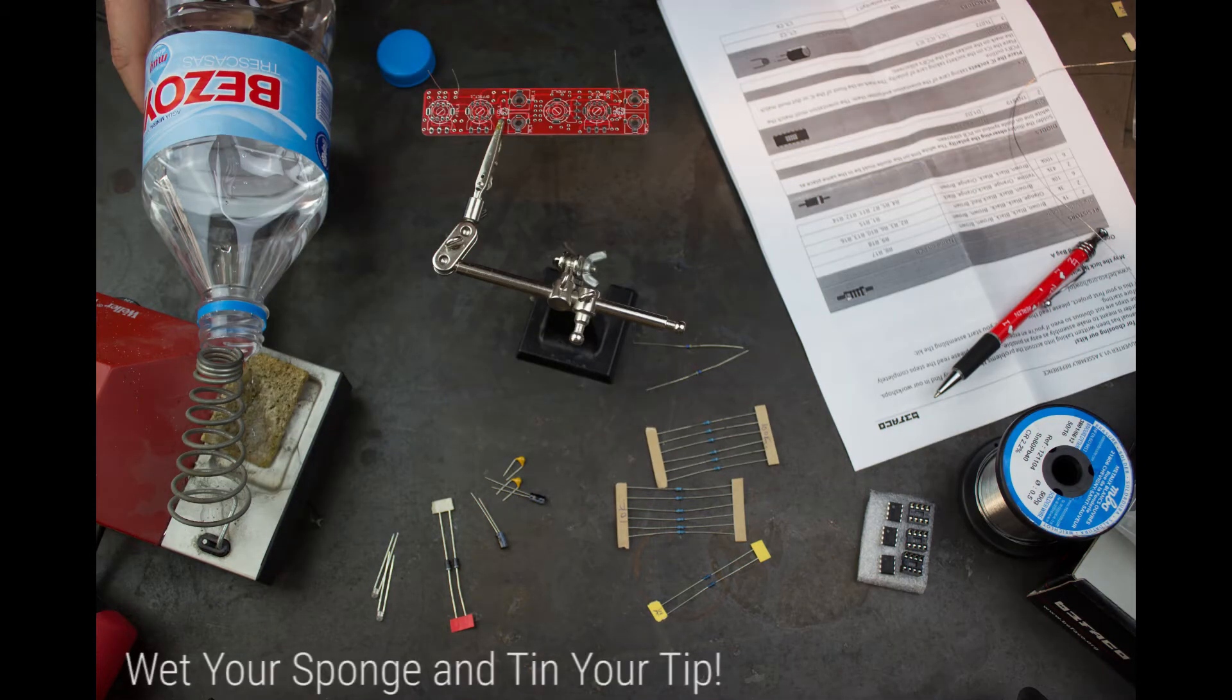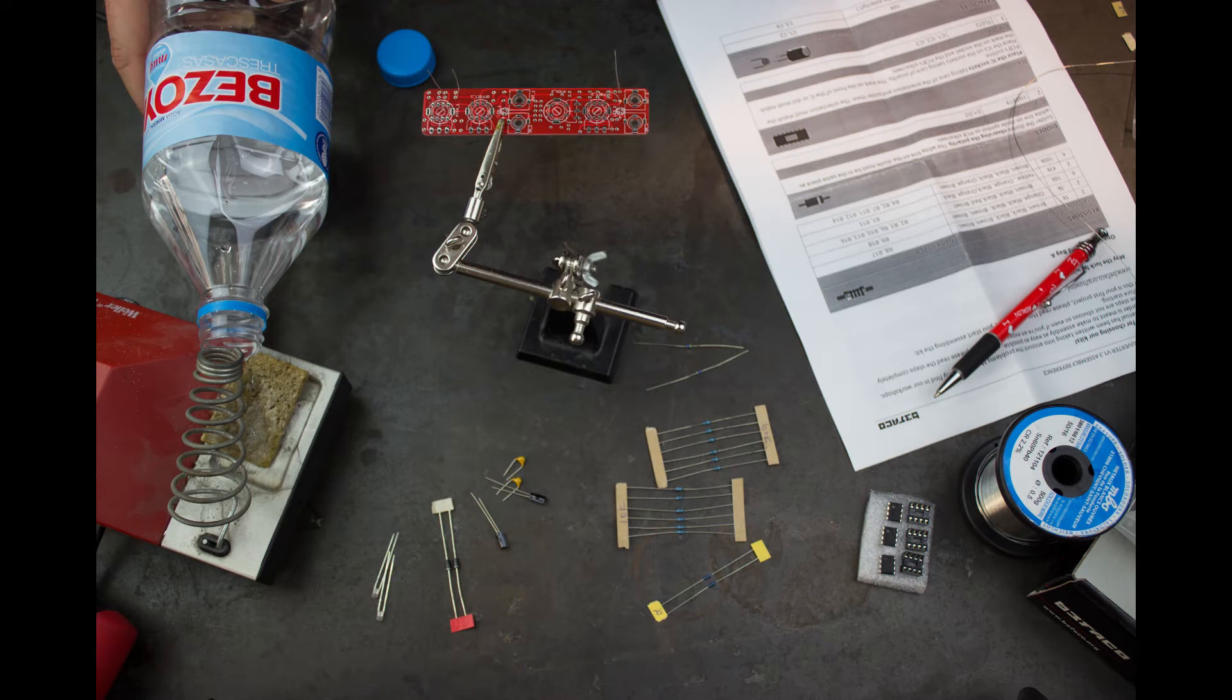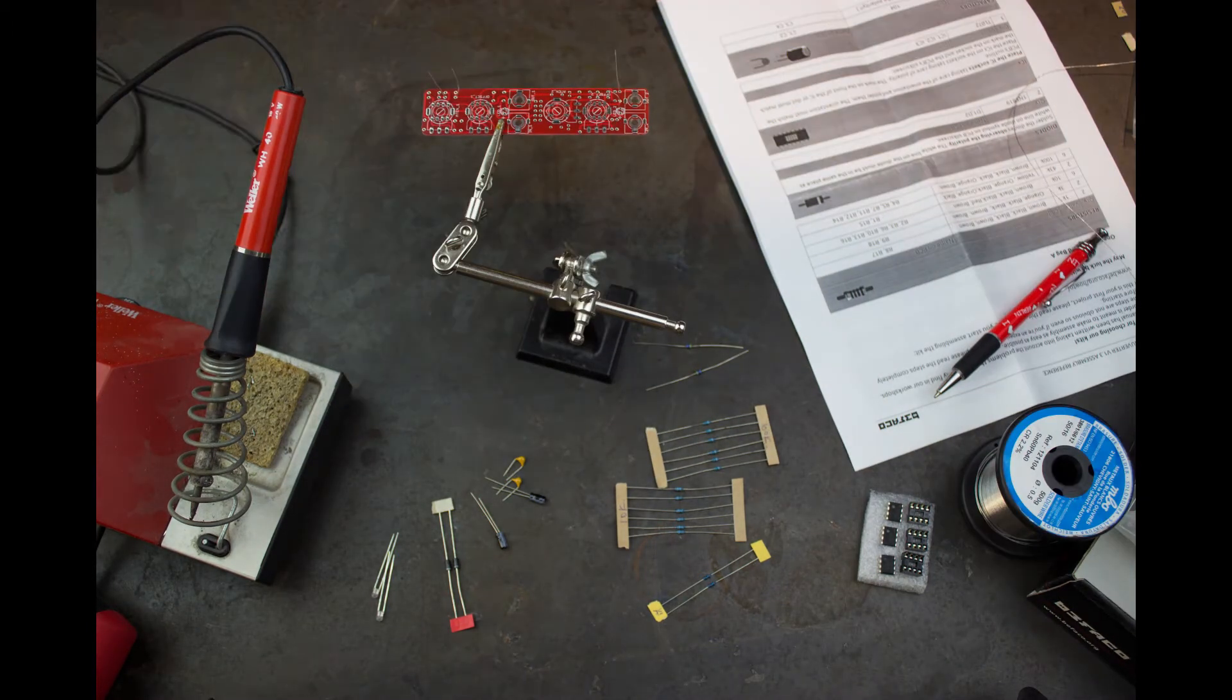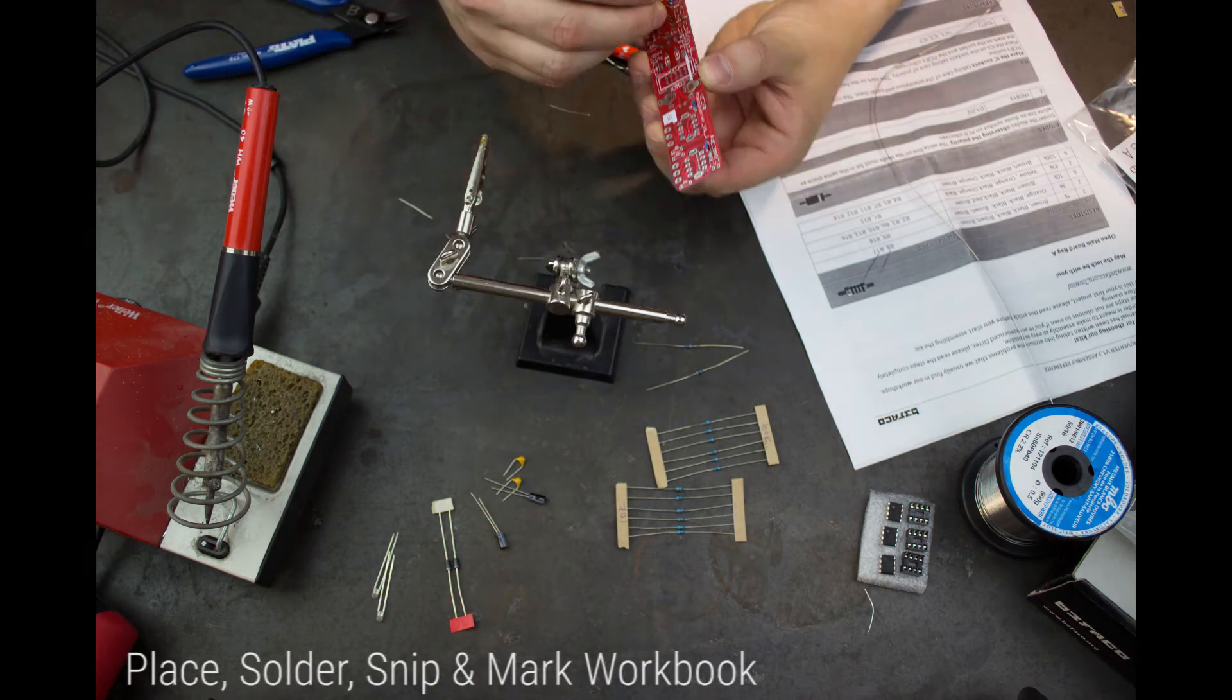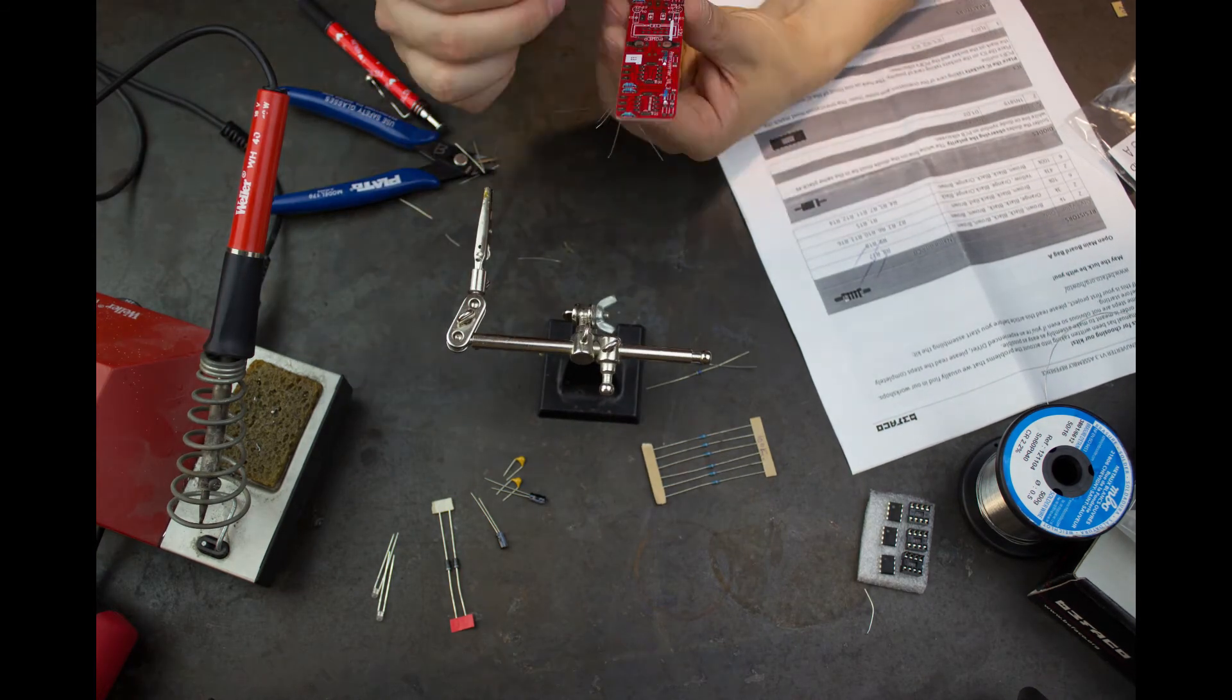Oops, don't forget to wipe your sponge for clearing the iron and to tin the tip just before soldering each group of resistors. Okay, so I am placing, soldering, snipping and marking off on the workbook for each set of resistors.